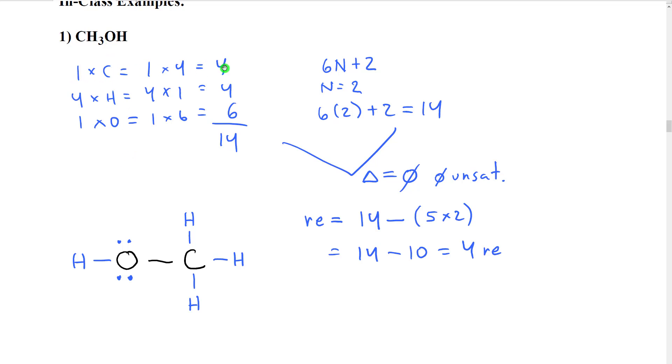If we calculate our valence electrons as I showed earlier, we would get 14 valence electrons. Also, as I showed earlier, N for this formula is 2 because we have one carbon and one oxygen, and the rest are hydrogen. So that's a total of two non-hydrogen atoms. So 6 times 2 plus 2 is 14.